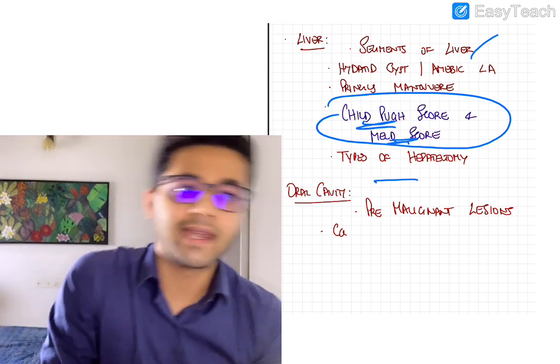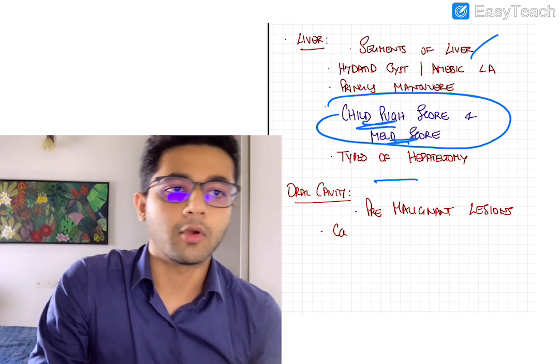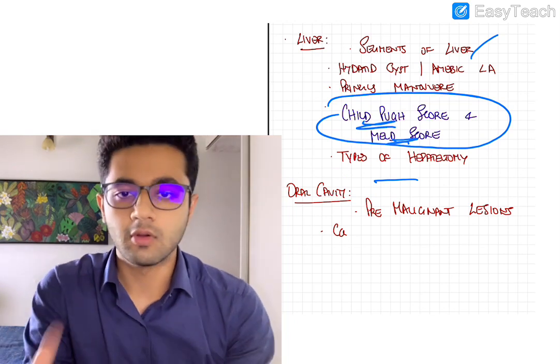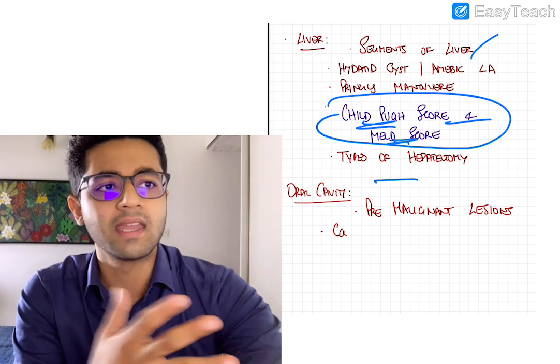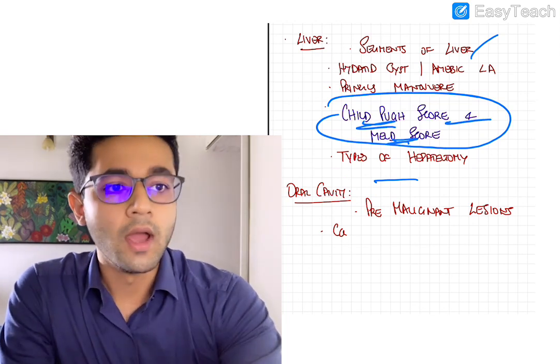Types of hepatectomy, fairly important. Pringle's maneuver, fairly important. But if you know Child-Pugh and MELD score, then you are in a good position. And I think you should know that. That's a must-know. So again, it's in purple because it's a must-know.